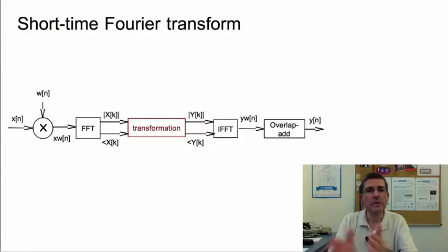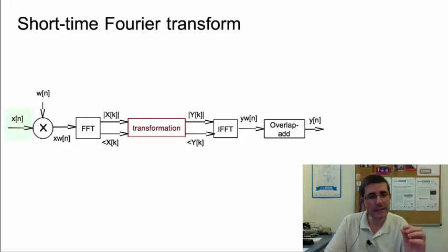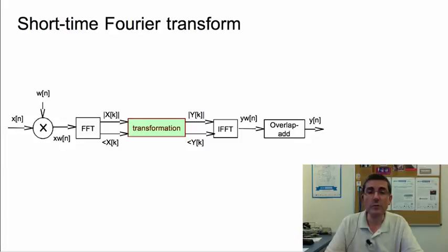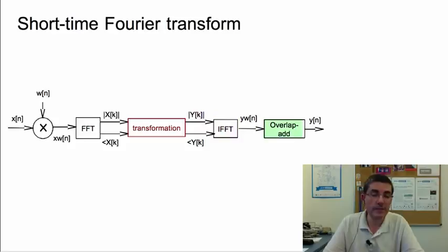Let's start with the short-time Fourier transform. This is the block diagram we saw, in which frame by frame we select a fragment of a sound, compute the spectrum, and obtain a magnitude and phase. What we are now introducing is a transformation block after this spectral analysis. From this transformation we obtain a new magnitude and phase spectrum that can be inverted to obtain a new sound that is a modified version of the input sound.